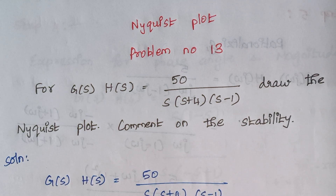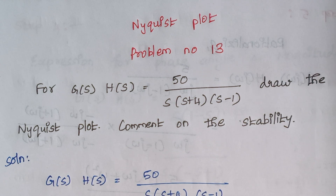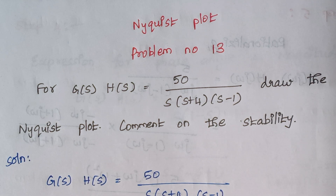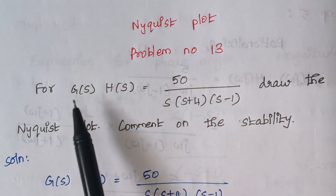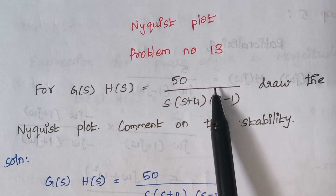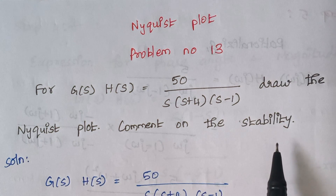Hello viewers, I am Kousalia. Today we are going to solve problem number 13 under the topic Nyquist plot. To know the procedure of how to solve a problem using Nyquist plot, I had made a video — I will give the link in the description, kindly watch it. The problem is: for G(s)H(s) equal to some given transfer function, draw the Nyquist plot and comment on the stability.